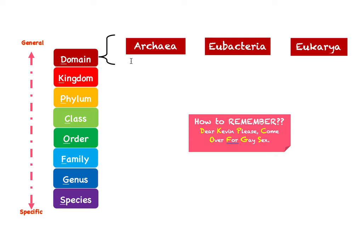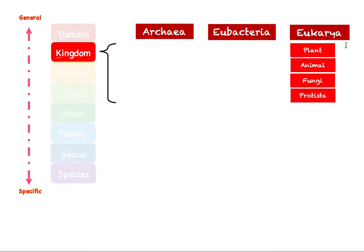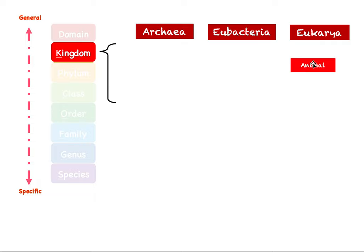All organisms on earth can be categorized into one of three domains. All the eukaryotic organisms — such as plants and animals, all organisms with eukaryotic cells — fall under the Eukarya domain. Everything under this category can be divided into kingdoms: plants, animals, fungi, and protista. In this video we're only going to focus on the animal part.